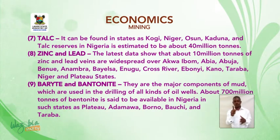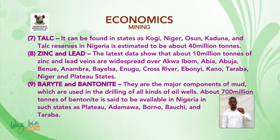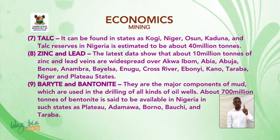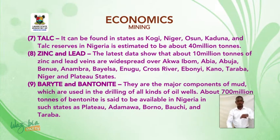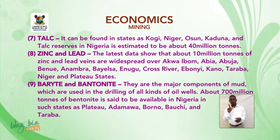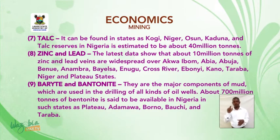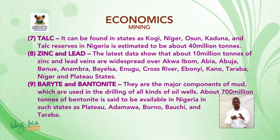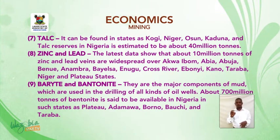Talc — it can be found in states such as Kogi, Niger, Osun and Kaduna. Talc reserves in Nigeria are estimated to be about 40 million tons. Zinc and lead — the latest data show that about 10 million tons of zinc and lead veins are widespread over Akwa Ibom state.